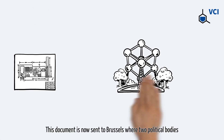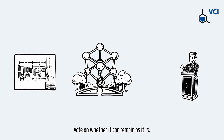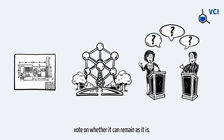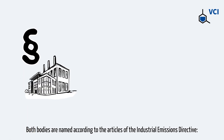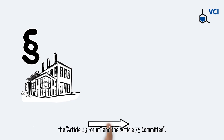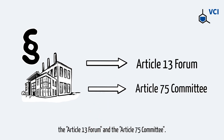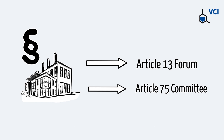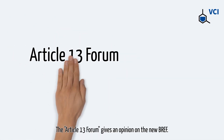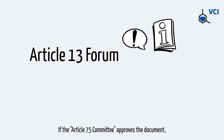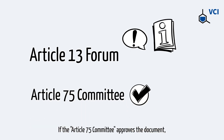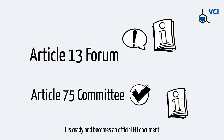This document is now sent to Brussels where two political bodies vote on whether it can remain as it is. Both bodies are named according to the articles of the Industrial Emissions Directive: the Article 13 forum and the Article 75 committee. The Article 13 forum gives an opinion on the new BRAF. If the Article 75 committee approves the document, it is ready and becomes an official EU document.